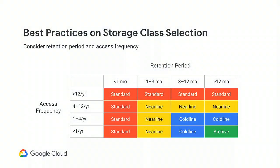Best practices for selecting storage classes come down to a combination of retention period and access frequency. If you access data very frequently or won't keep it very long, standard gives you the best price. For data stored ten years and never read, archive is the clear choice. Nearline and coldline fit in the middle — if you're accessing data less than once a year and storing for more than 12 months, that's where the archive class fits in.